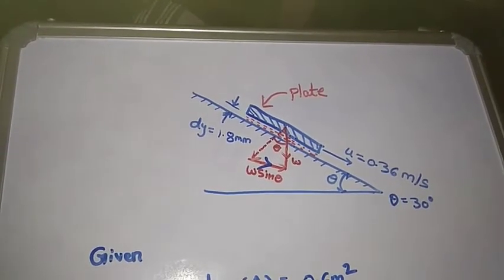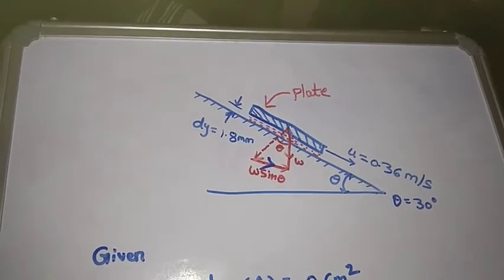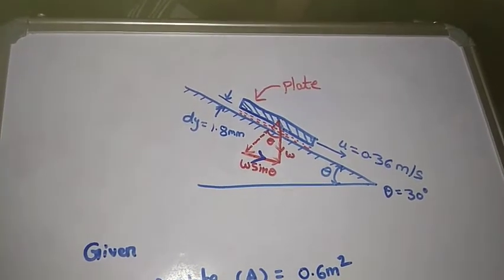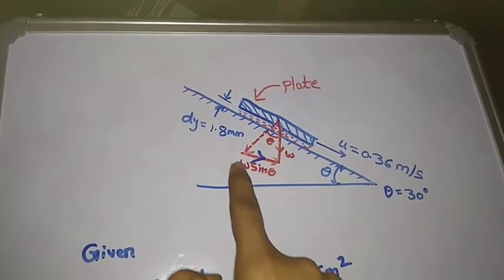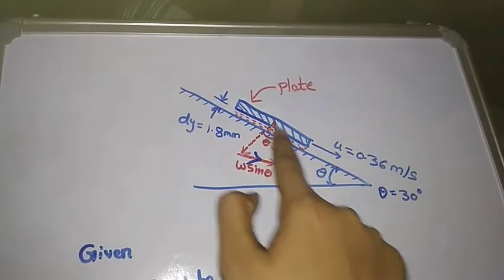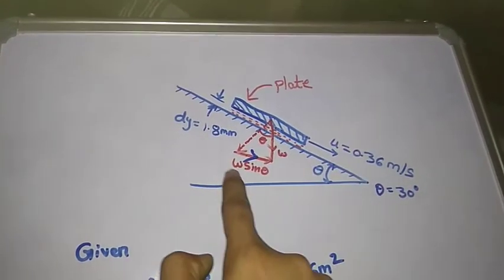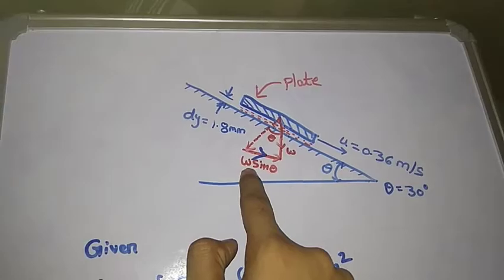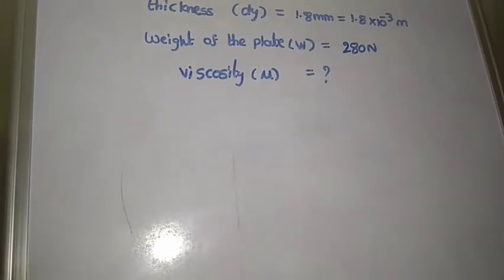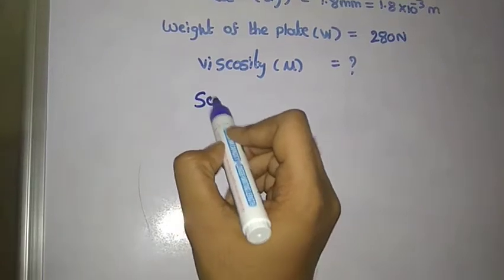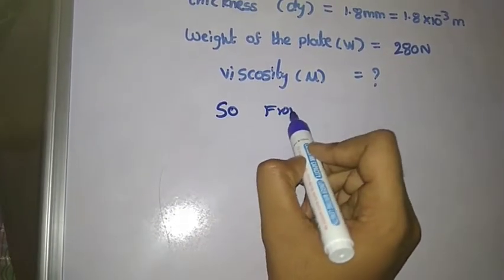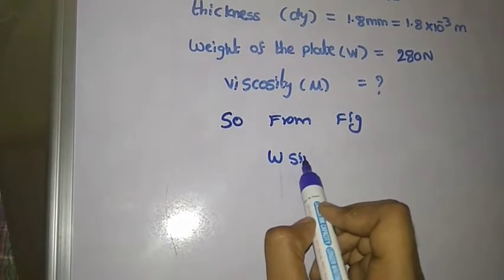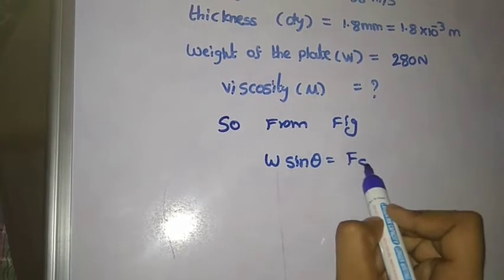From the shear stress definition, shear stress acts only in tangential directions. Normal stress is represented by σ. We are not taking normal stresses; we are taking shear stress, so we take the parallel direction of this plate, which is W sin θ. This is Fs, the shear force. From the figure, W sin θ = Fs, the shear force.